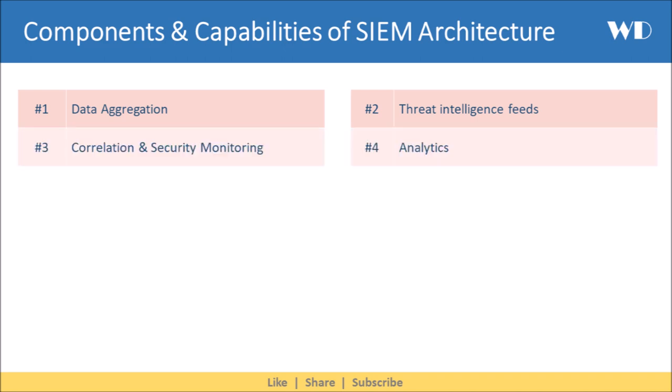Third, it provides correlation and security monitoring. It links events and related data into security incidents, threats, or forensic findings. SIEM also helps with analytics — it uses statistical models and machine learning to identify deeper relationships between data elements.